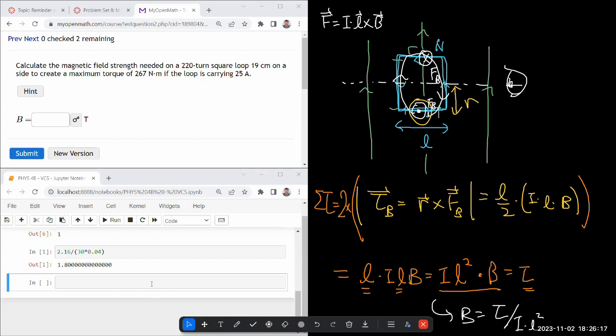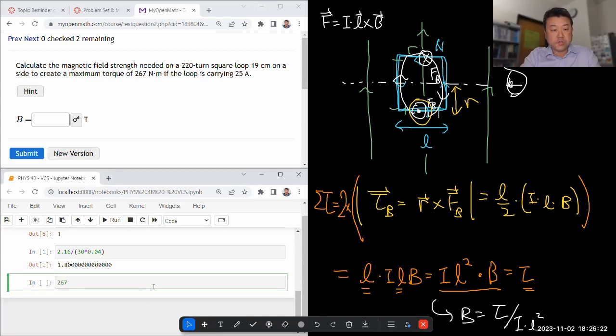I think I have everything else. I'm just going to make sure that I plug everything in basic SI units. The torque is 267 Newton meter divided by current 25 ampere. Oh, and here is where I'm going to multiply 25 by 220 because for each one of these I did, there's actually 220 of them. So 220 times 25. And then I need L squared. So there, the 19 centimeters is 0.19 meter squared.